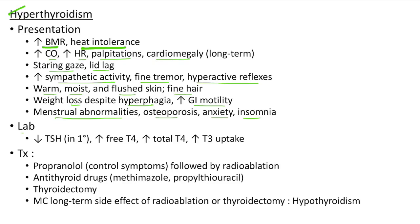Laboratory findings in hyperthyroidism include low TSH (especially in primary hyperthyroidism), elevated free T4, total T4 and T3 uptake. For treatment, we can use propranolol to control symptoms followed by radioablation. We can give antithyroid drugs like methimazole and propylthiouracil. Surgical treatment includes thyroidectomy. The most common long-term side effect of radioablation or thyroidectomy is hypothyroidism.